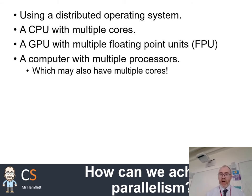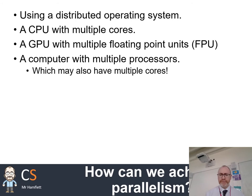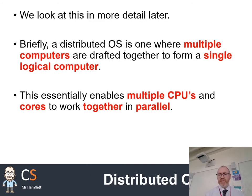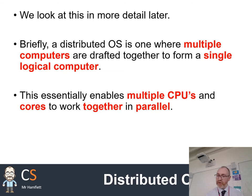A multiple-processor computer tends to be servers and larger, more powerful computers with multiple processors, each of which could also have multiple cores. This is only really necessary when we need massively parallel systems — essentially just servers. A distributed OS is where multiple computers are drafted together to form a single logical computer; the roles of the operating system might be spread around, but ultimately the multiple CPUs of different computers can work together in parallel. An example might be linking loads of Raspberry Pis together to form a more powerful computer — some research centres at universities have actually taken this approach.